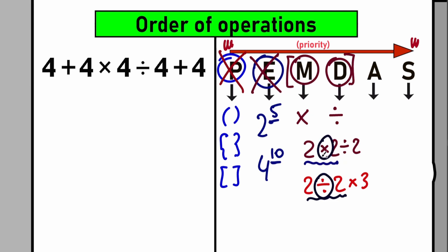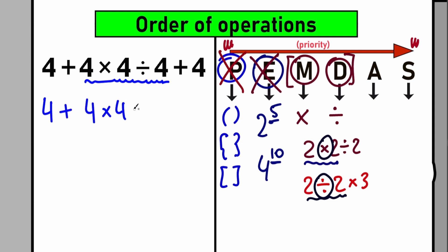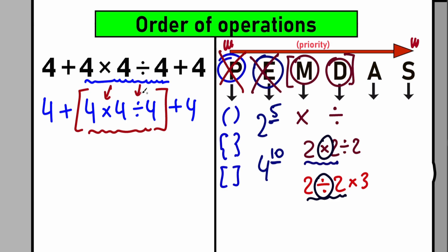Let's look closely at our question. We have multiplication and division — let's underline where. We have addition (not interested), then multiplication, then division. We can put imaginary brackets in our head around the expression '4 times 4 divided by 4'. The first sign from left to right is multiplication, so we need to multiply 4 times 4 first.